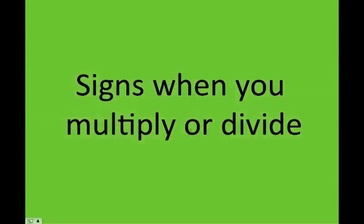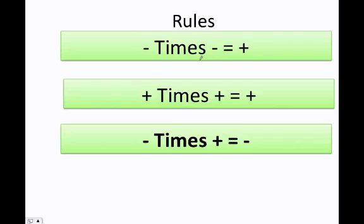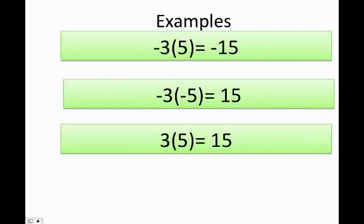Now when you multiply or divide, the rules are a little bit different when it comes to the signs. Negative times negative means positive. Positive times positive is positive. Negative times positive is negative. For example, negative 3 times 5 gives me negative 15. Negative 3 times negative 5 gives me positive 15. This is very important because a lot of students don't make a difference between the signs when they multiply or divide.